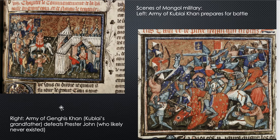Here I have some good labeling for you. The scenes of the Mongol military — on the left is the army of Kublai Khan preparing for battle. Kublai Khan was the Mongol leader that Marco Polo supposedly met, so he's contemporary with the Polos. On the right, the army of Genghis Khan — Kublai's grandfather — defeats Prester John. That's a story somebody probably told him. If you want to go down a deep weird hole, just Google Prester John — he has a very interesting story, but it's all apparently fiction.